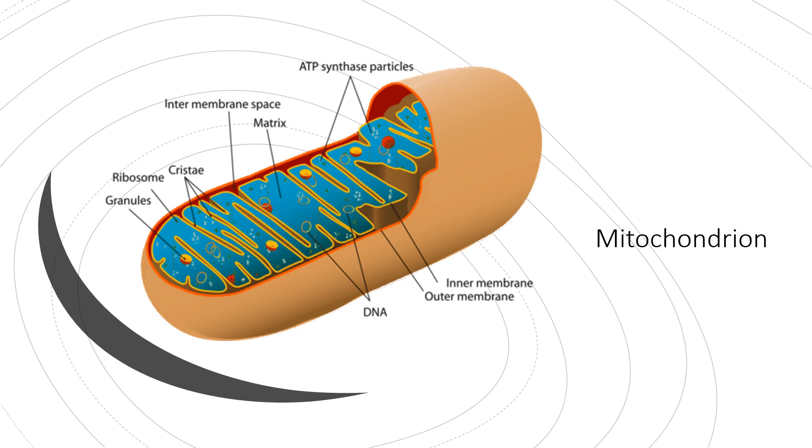The space enclosed by the inner membrane is called the matrix. So if you see what's inside the inner membrane, the innermost part of the mitochondria, that's called the matrix.